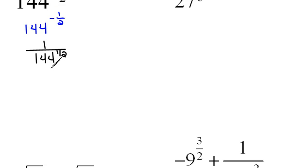Now again, we can keep rewriting this if we understand how all these things work together, what the rules are. To the 1 half power means the square root. So now I could literally rewrite this as 1 over the square root of 144. And now we can simplify. That would be 1 over the square root of 144 is 12.